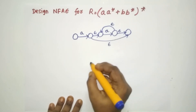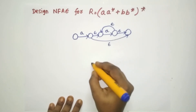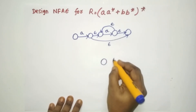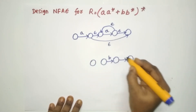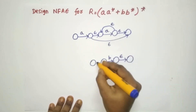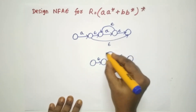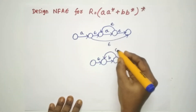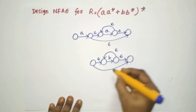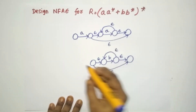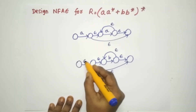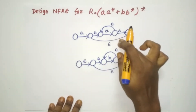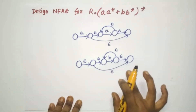Similarly, create B·B* for the bottom. First, create the NFA for B*, with the appropriate initial, final, and Epsilon transitions using Thomson's construction. Then add the B-transition state before it. After making all Epsilon transitions accordingly, this gives us B·B* on the bottom. A*, A·A*, and B·B* are now all created.